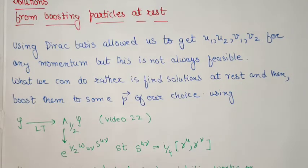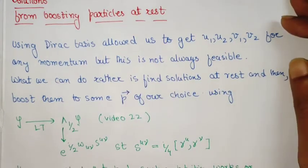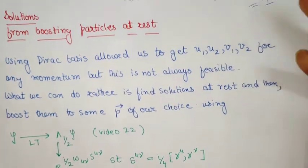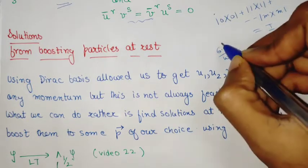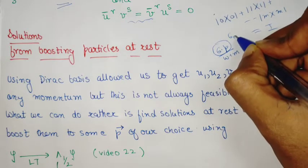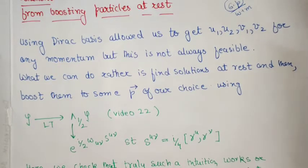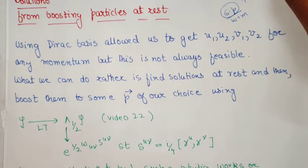The idea is we found four solutions of the Dirac equation, and these solutions are valid for any momentum we take, because we essentially had this sigma dot p over omega plus m term. So any momentum we can orient our spin along that direction to get the desired solution. But this is in general not always feasible — particularly if we try finding the solutions using a Weyl basis, we will see that it is not possible to find the solutions like this. So the solution will look a bit different in a Weyl basis.